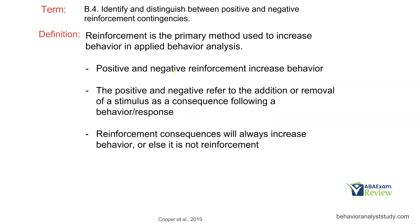Reinforcement is the primary method used to increase behavior in applied behavior analysis. If we think about our contingency — antecedent, behavior, consequence — we're talking about the consequence. Reinforcement is a consequence that increases behavior, whether that's added or taken away. Always remember when you have a consequence question, you have to think about what behavior are we looking at and how is it changing.